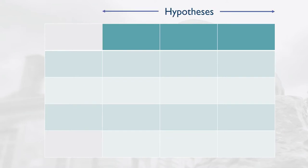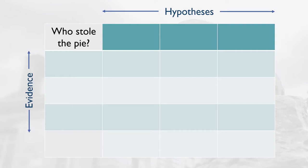ACH asks us to use a table format, where we put our hypotheses along the top and list our evidence along the side. So in our example here, we're trying to find out who stole the pie. Now obviously Bob is a little bit fixated on Mary as a culprit, but if he was feeling a bit more open-minded, he may be able to generate a few more ideas. For the sake of this example, we're going to have Mary as a possible culprit alongside another neighbour and the fox.